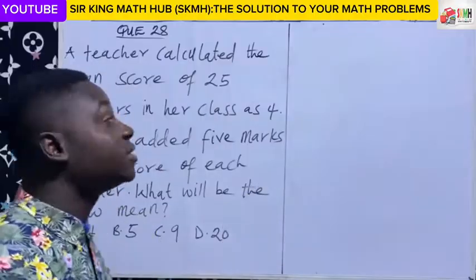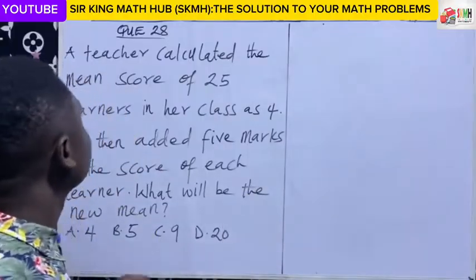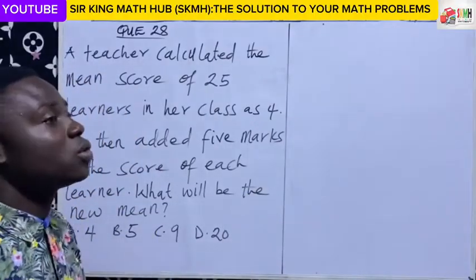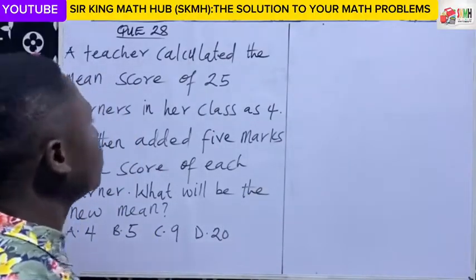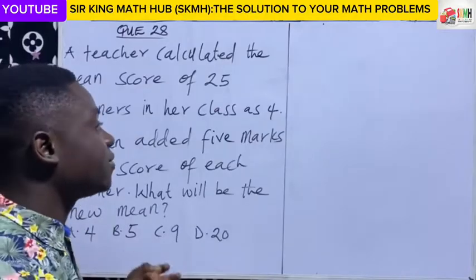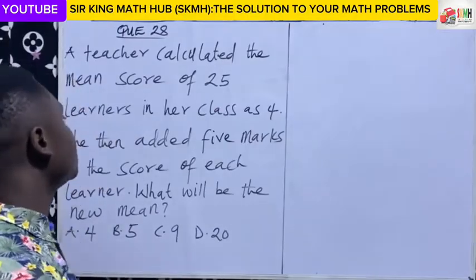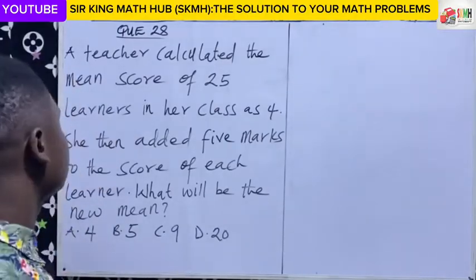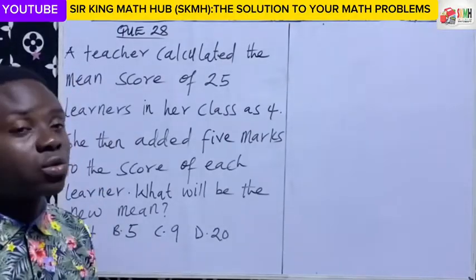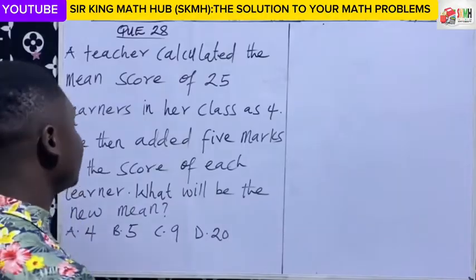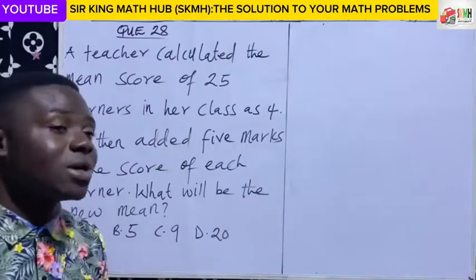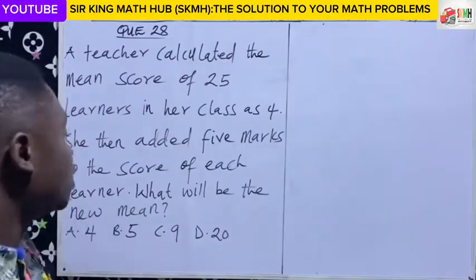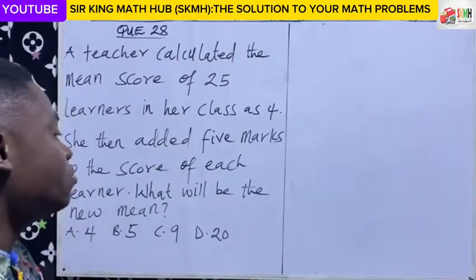Question 28. The teacher calculated the mean score of 25 learners in her class as four. She then added five marks to the score of each learner. What would be the new mean?